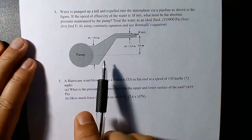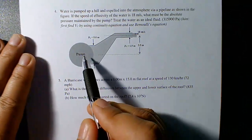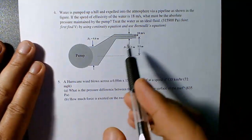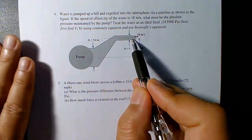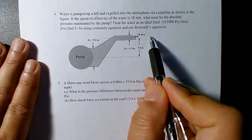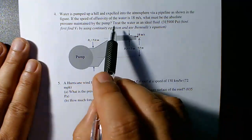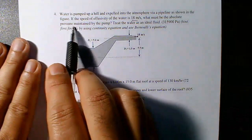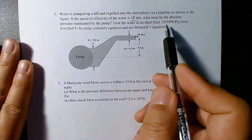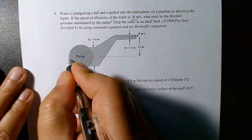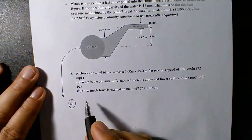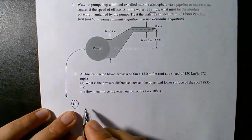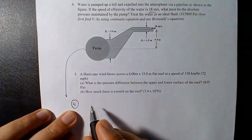The next problem uses Bernoulli's law. Water is pumped uphill through a pipe of varying cross-section. The upper end of the pipe is open to the atmosphere, expelling water at 18 meters per second. What absolute pressure must the pump maintain to keep the flow rate constant? Treat water as an ideal fluid.